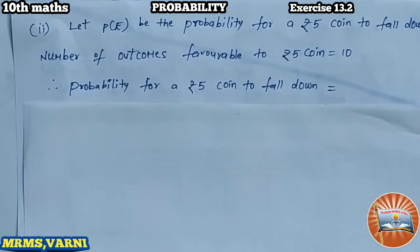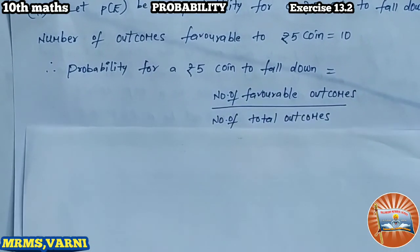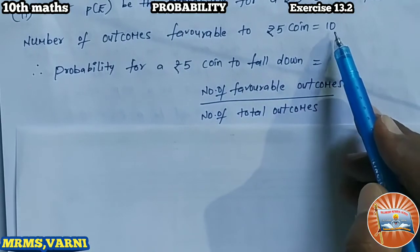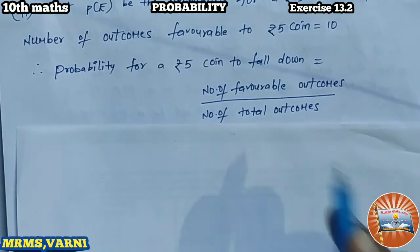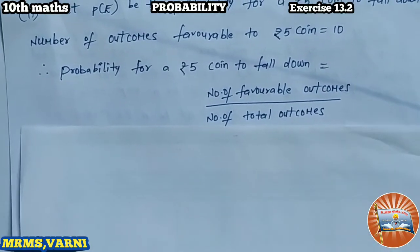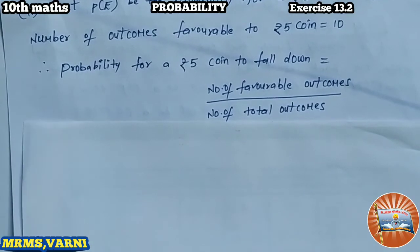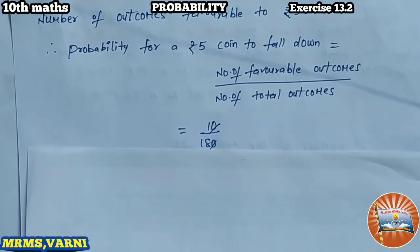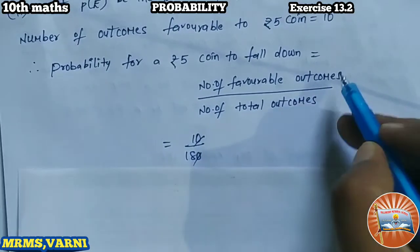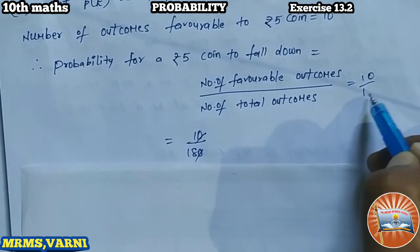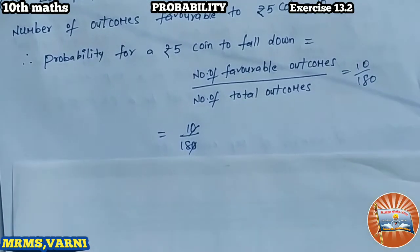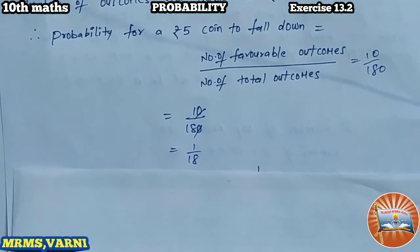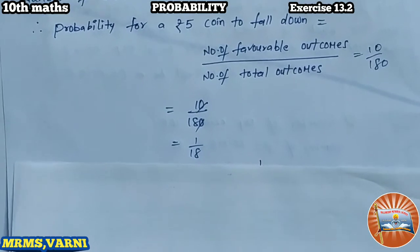The probability of a five-rupee coin falling down equals the number of favorable outcomes divided by the number of total outcomes. Favorable outcomes = 10, total outcomes = 180. So that is 10 by 180. Cancelling the zeros, we get 1 by 18. That is the probability of getting a five-rupee coin.